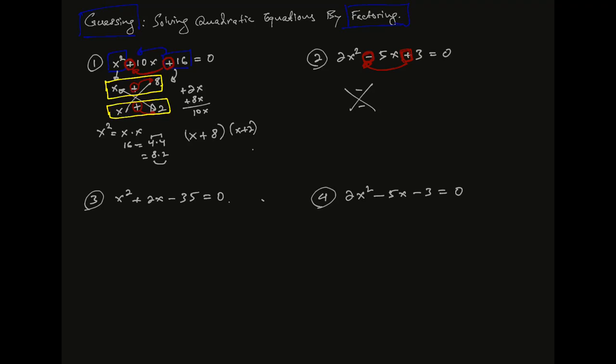The first thing we are going to do is work with the problem. 2x combined with x. 2x and x is close to the edge. You can't combine with 2x, so combine with one. That's right.